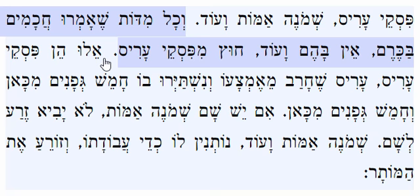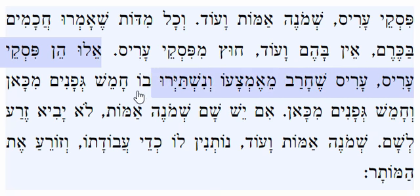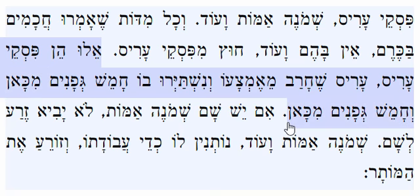Now the Mishnah explains what piskei aris are. Eiluhein piskei aris — this is what a piskei aris is, a gap in an aris. Aris shecharav me'emtso'ei, v'nishhtairu b'chamesh kfanim mikan, v'chamesh kfanim mikan. So the example would be that there is a row of 11 vines, each hanging on top of the wall, and the middle one was destroyed. Now there are five on each side, and each side is considered a vineyard, because when it's on a wall, five vines even in one row is a vineyard.